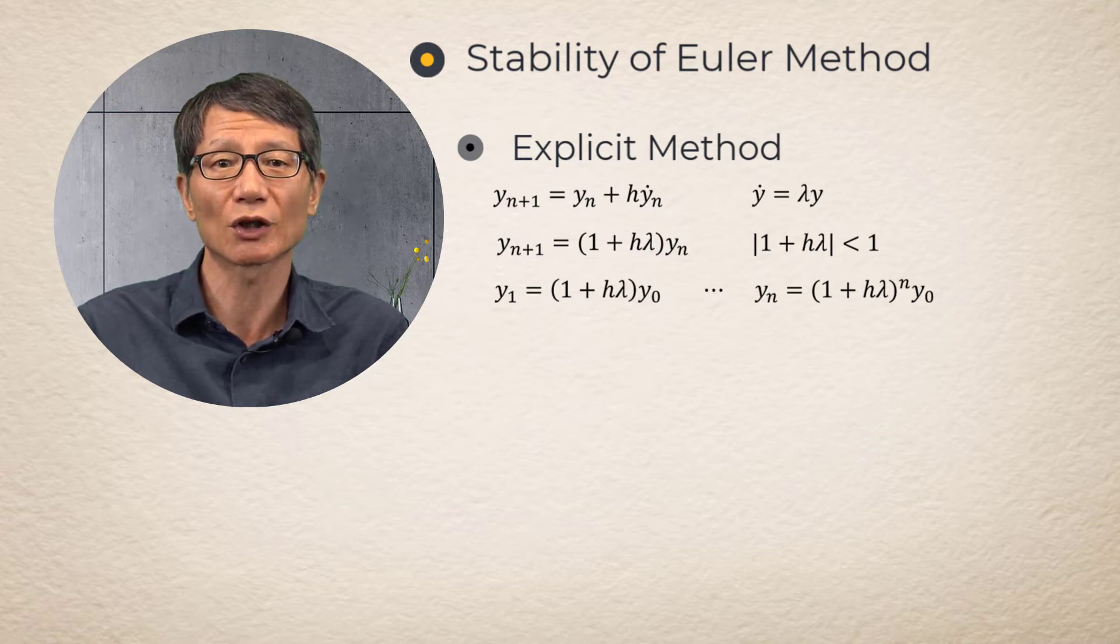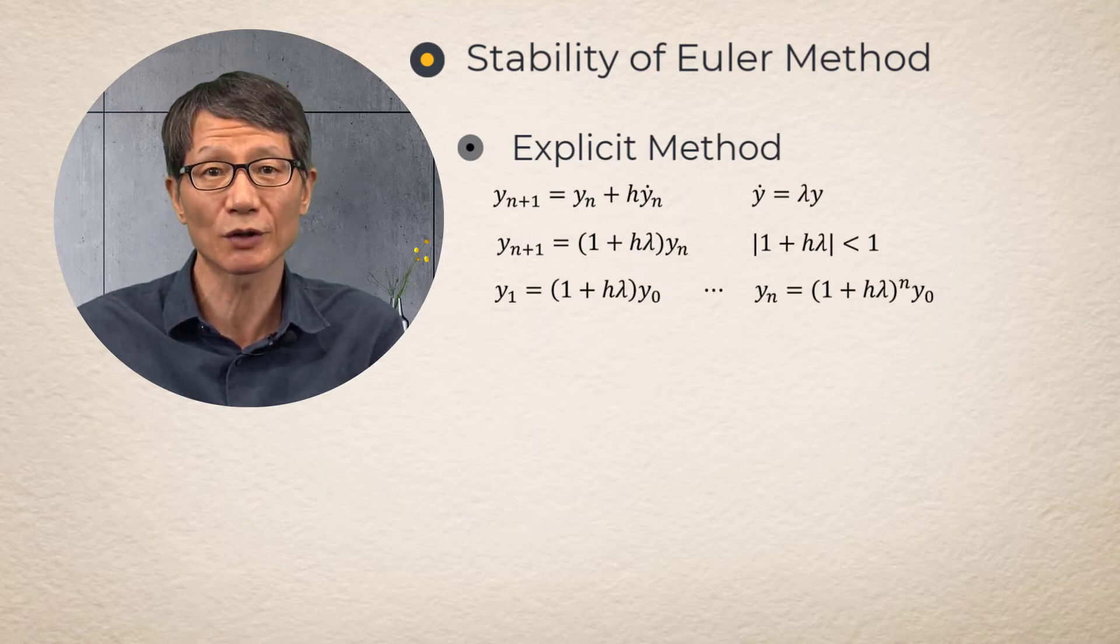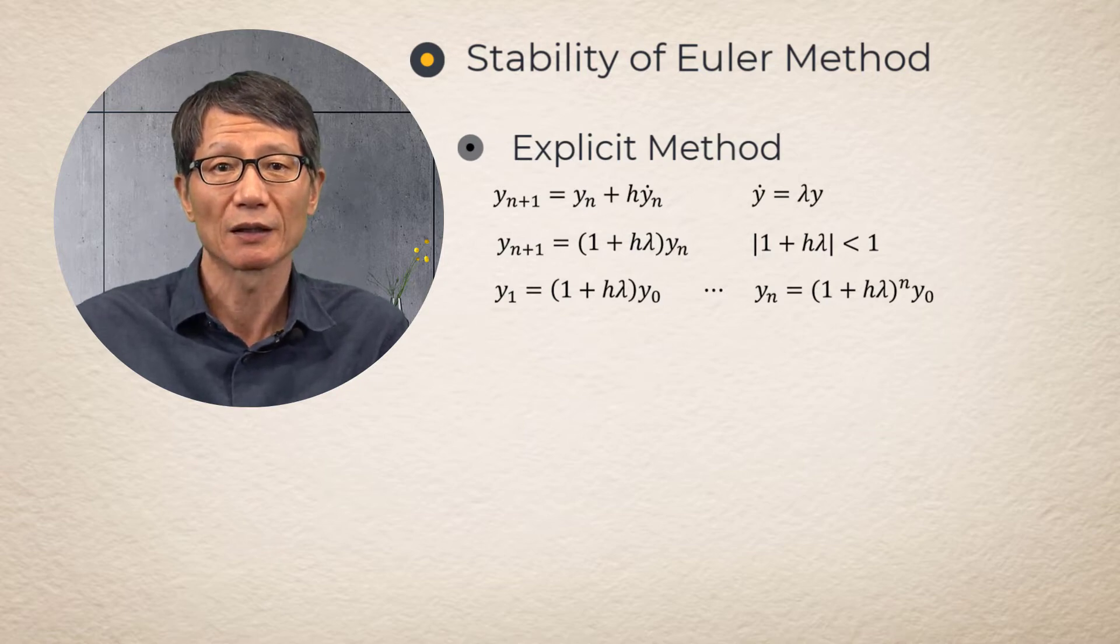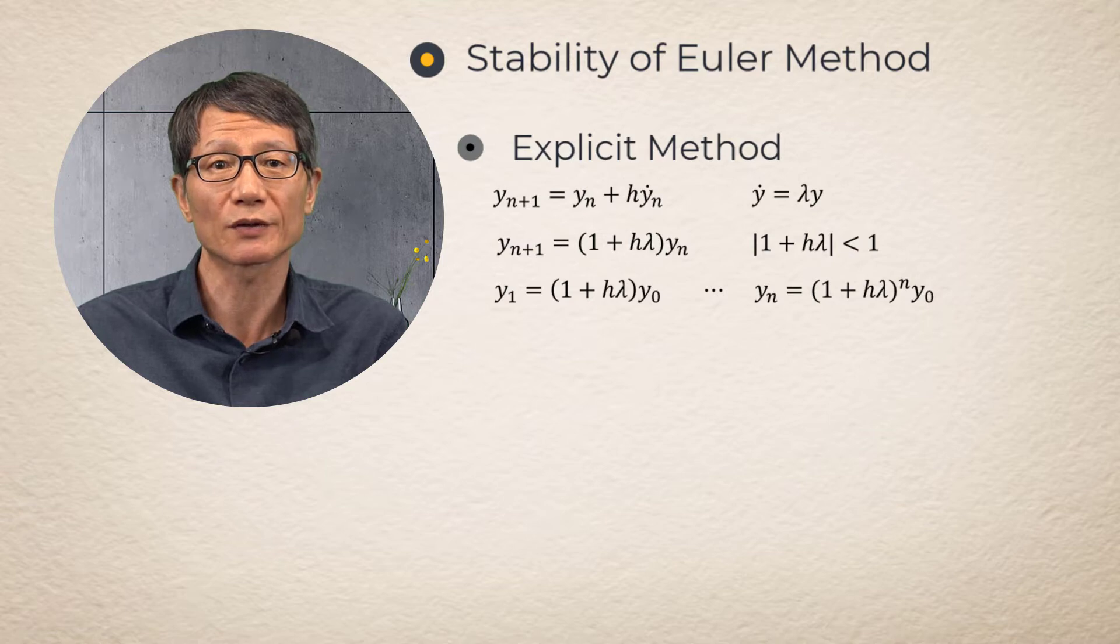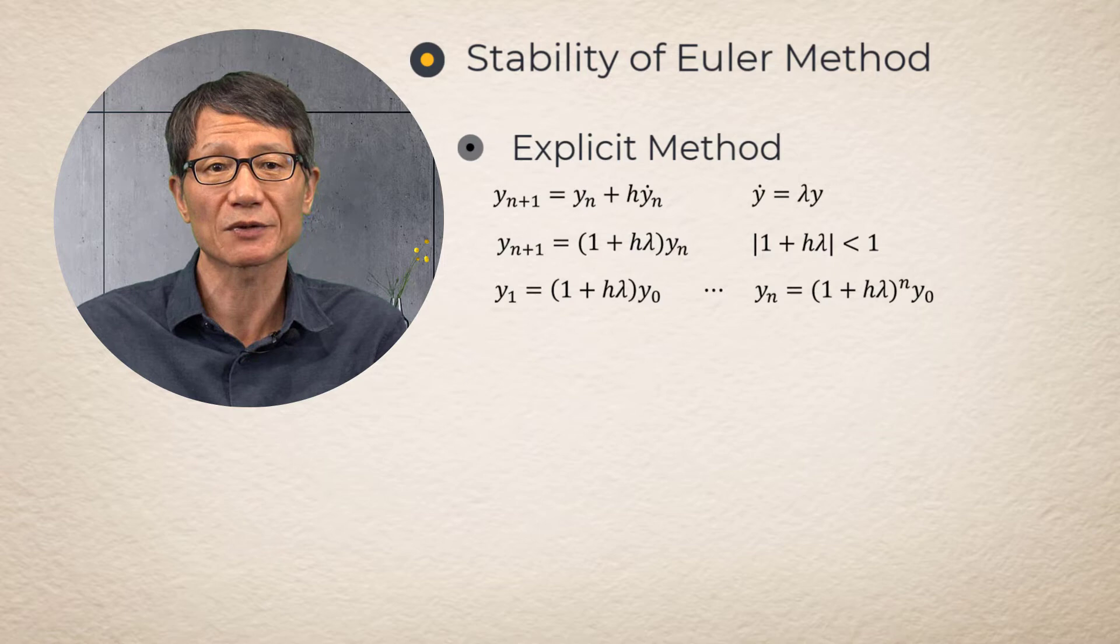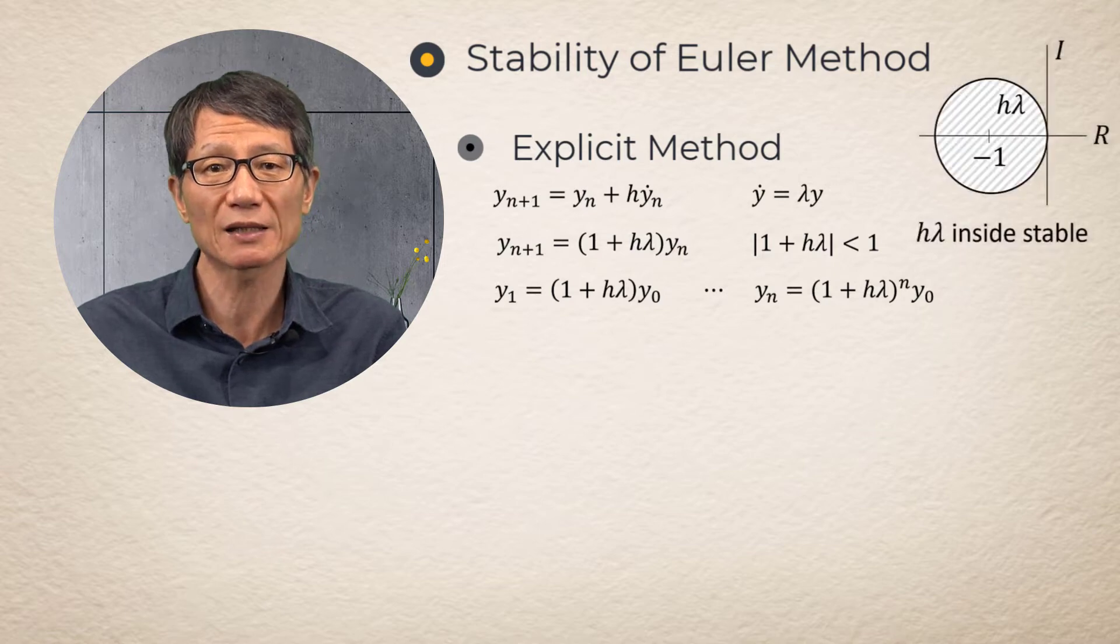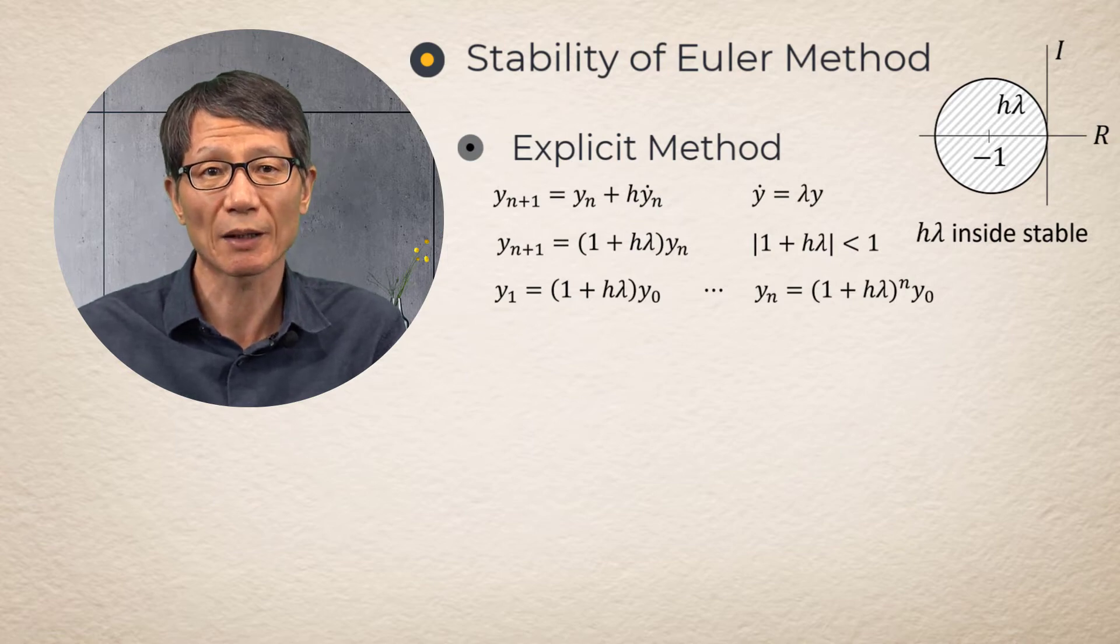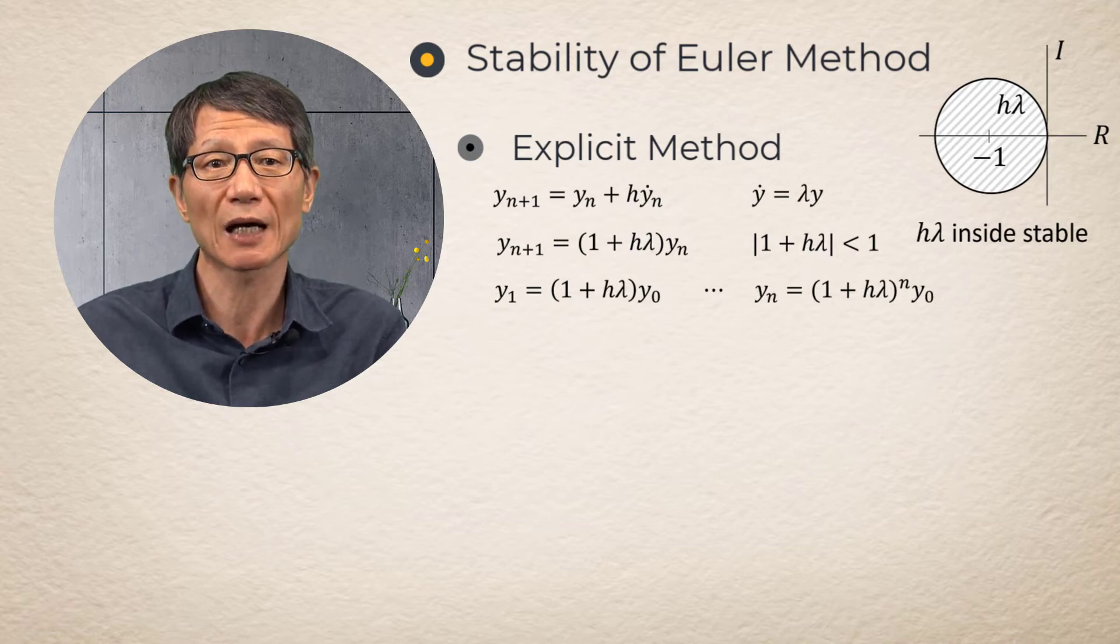Since the final solution of Y_n must be convergent to the exact solution of 0 after N steps, the multiplier of 1 + hλ must be smaller than 1. The convergence condition gives the stability region to be inside of 1 + hλ of the complex plane. For each given λ value, the stable step size can be determined.